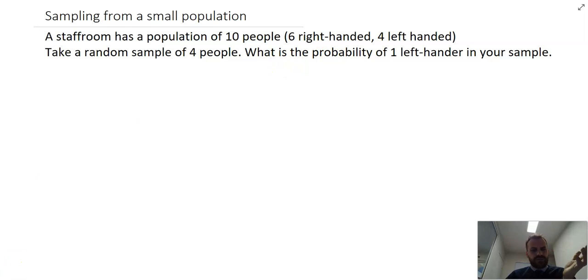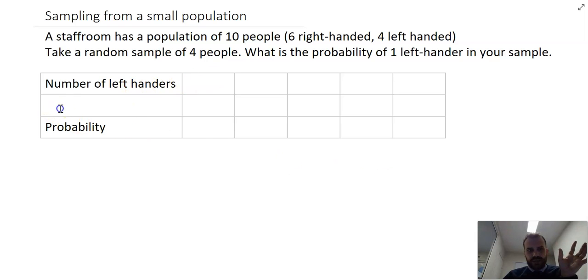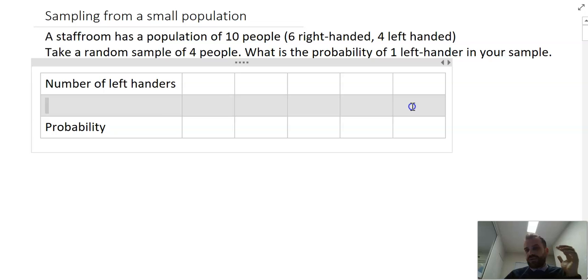This should feel very familiar. It's just probability. What we're going to do is, first of all, create a probability distribution. We're on a little table here. You'll notice that I've left a row blank. I need that row. I'm going to put something in there a bit later.